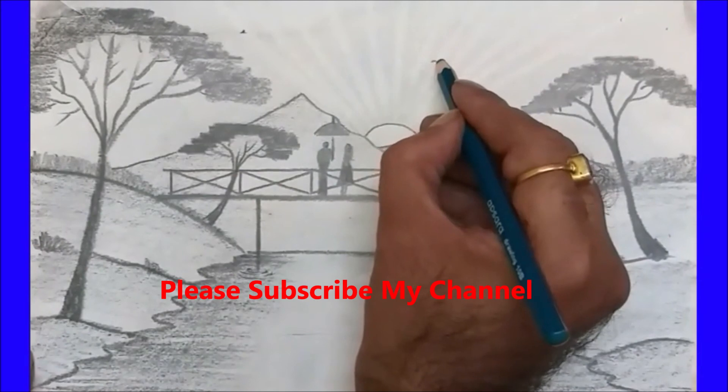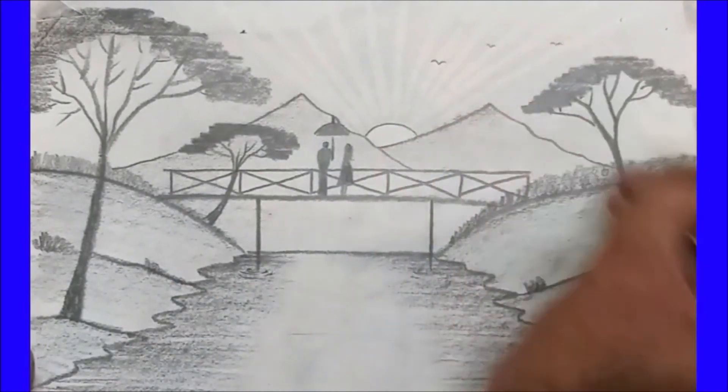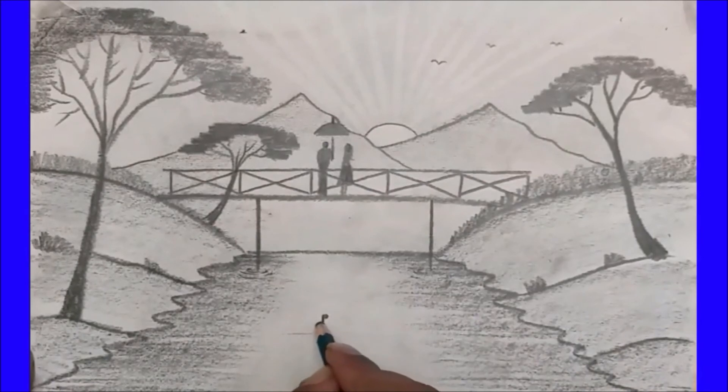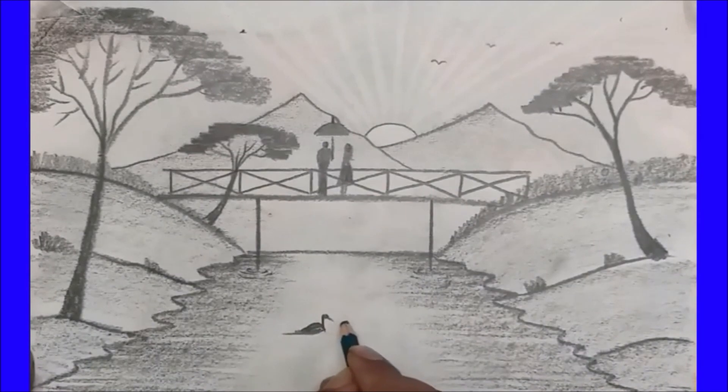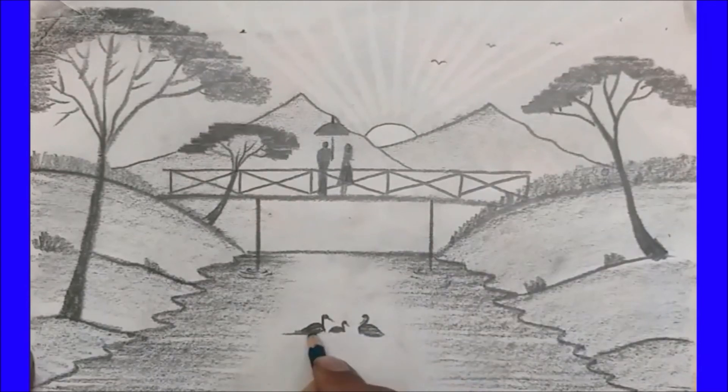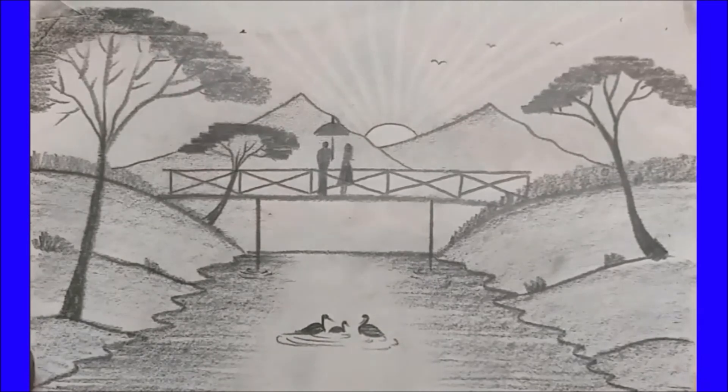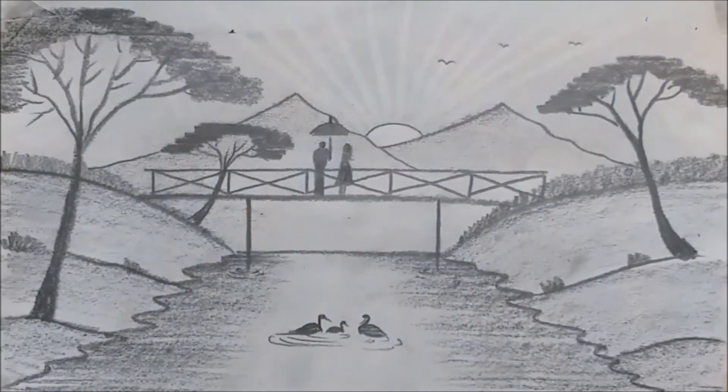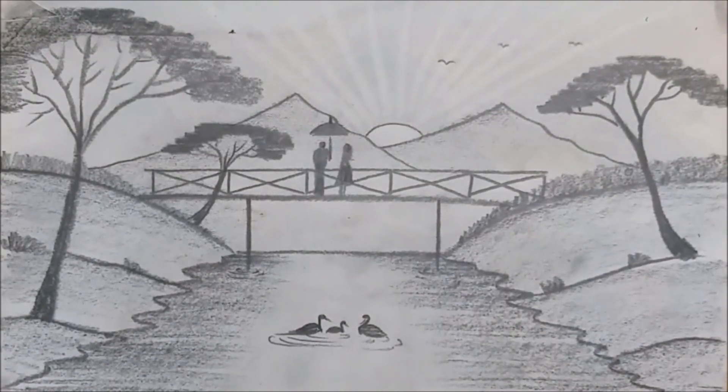And a few birds. Here's a small family of ducks, a few water levels. Here our drawing is done. You can make it yourself by giving dark tones and light tones. Thank you friends.